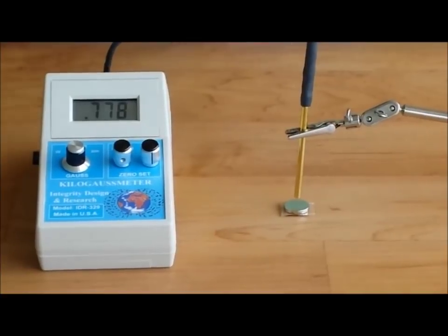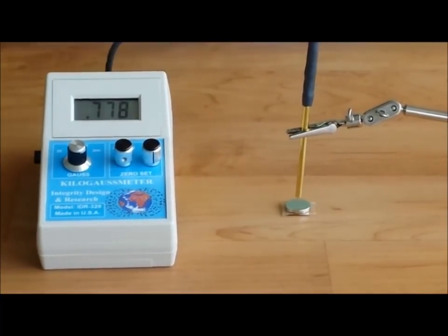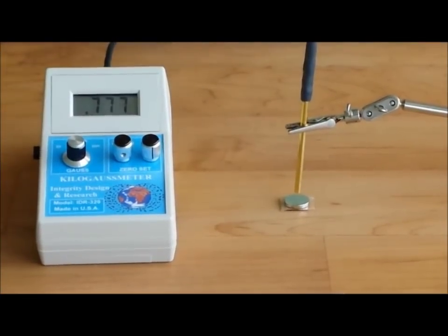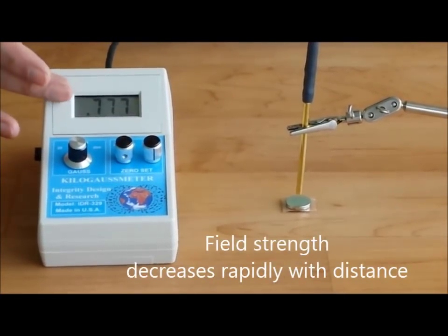This probe from a magnetic field meter, at this distance the magnetic field is about 778 Gauss, as you can see on the meter display.